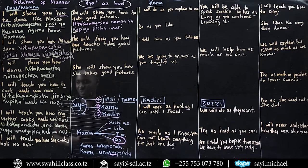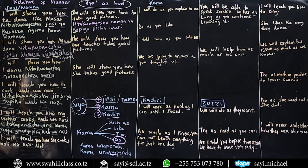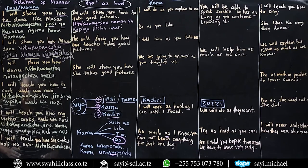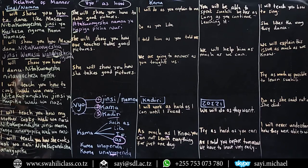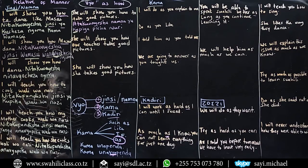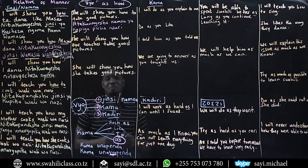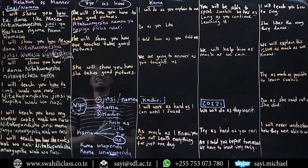The sentence I will teach you how she cooks wali wa nazi becomes: nitakufundisha anavyo pika wali wa nazi. Safi, safi sana — very clean, very good.